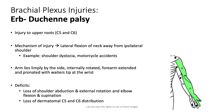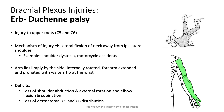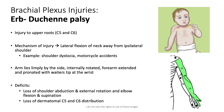We'll finish by talking about some common brachial plexus injuries. The first is Erb's palsy, which is an injury to the upper roots C5 and C6. It occurs due to lateral flexion of the neck away from the ipsilateral shoulder — examples include shoulder dystocia and motorcycle accidents. An upper root injury causes the arm to lie limply by the side, internally rotated, with the forearm extended and pronated with a waiter's tip posture at the wrist. The deficits include loss of shoulder abduction and external rotation, elbow flexion and supination, and loss of C5 and C6 dermatomal distributions.